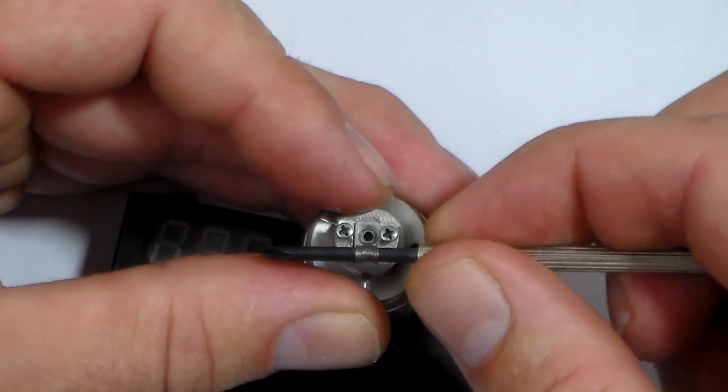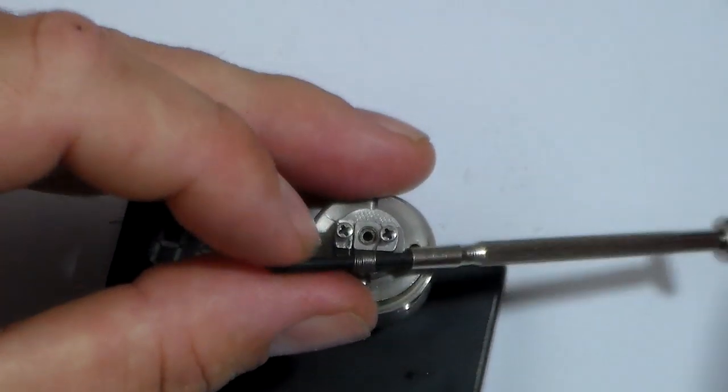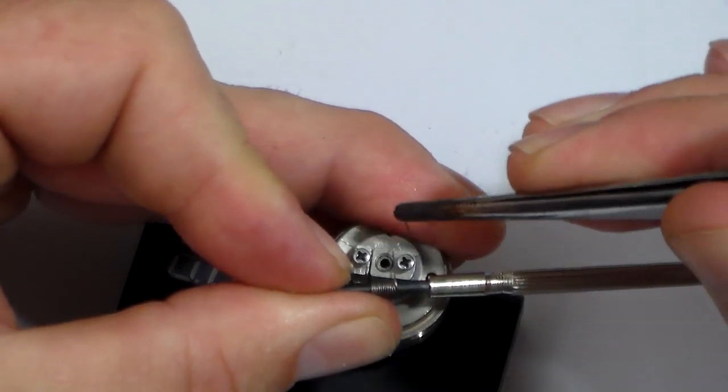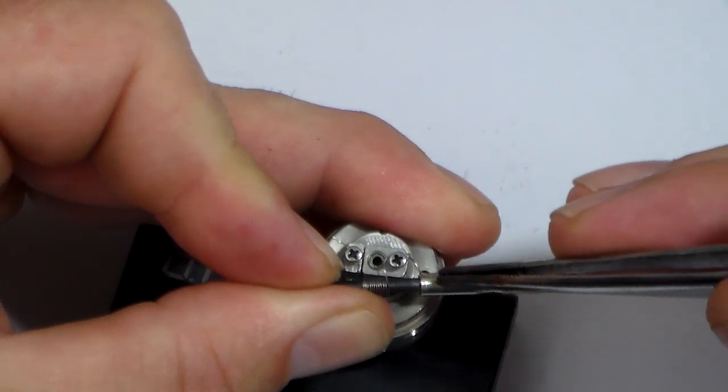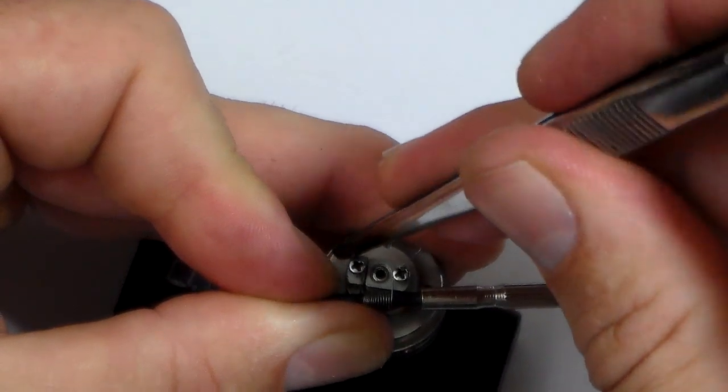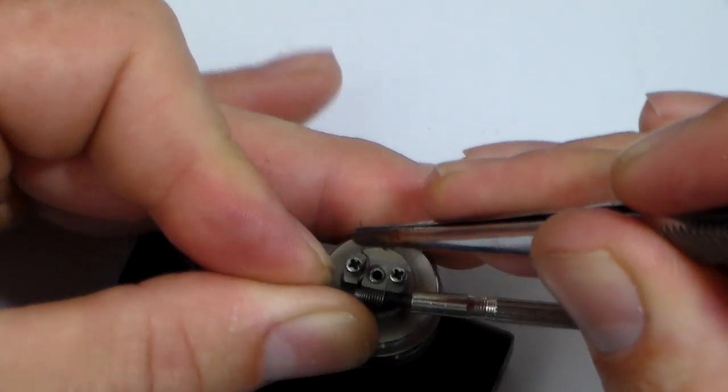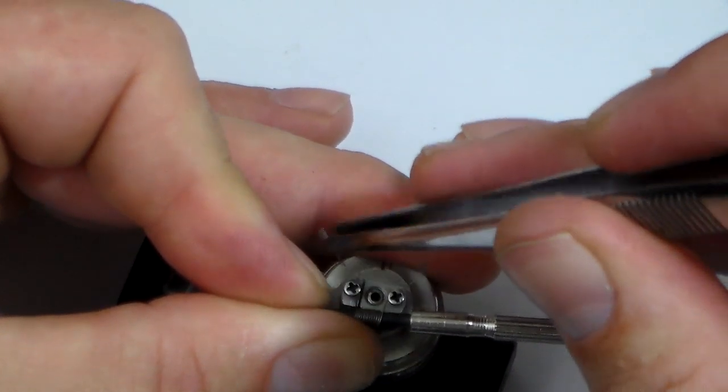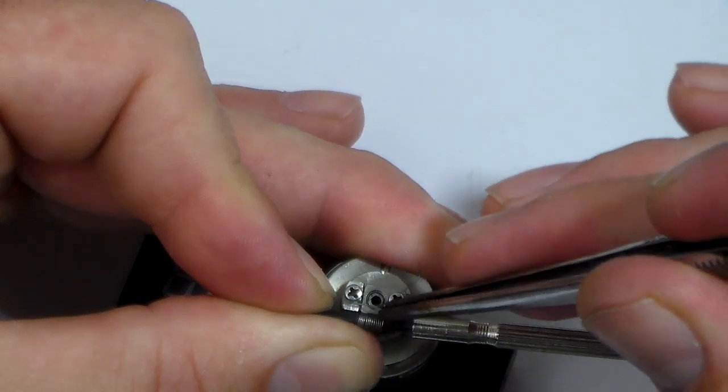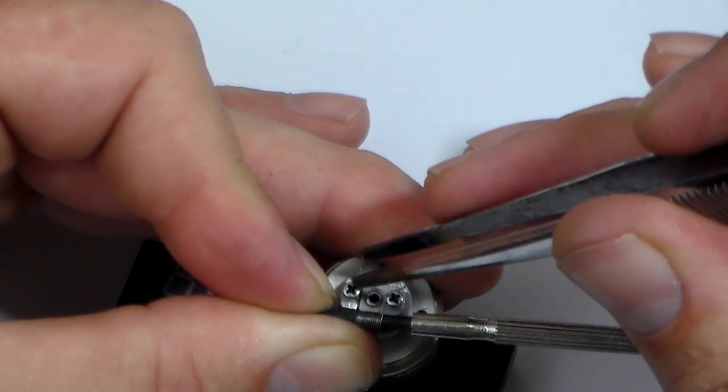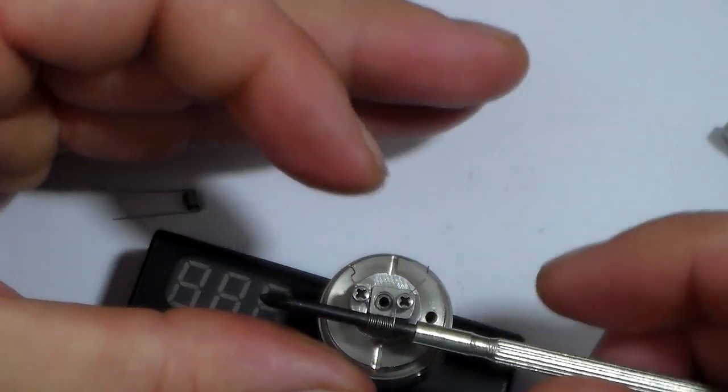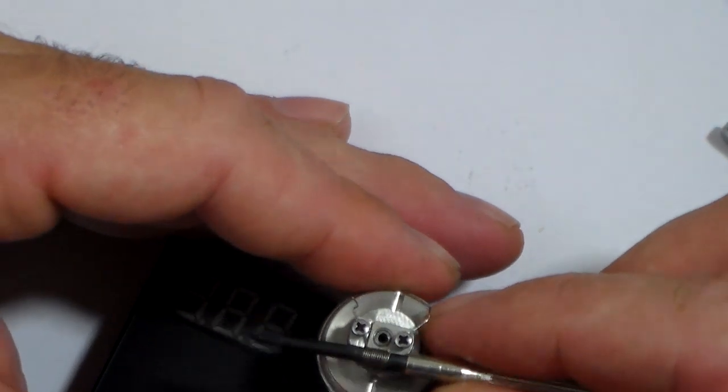Now we need to check and see if it's going to come up where we need it to be, and we're a little too far off. So a little trick is we'll unwrap that, pull it a little tighter. Go ahead and wrap it around. We need the coil closer, so I gotta unwrap it.